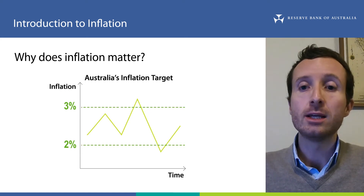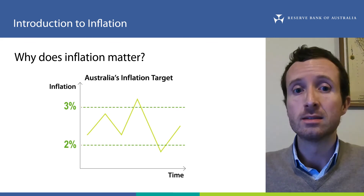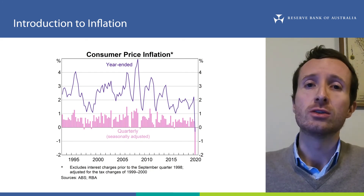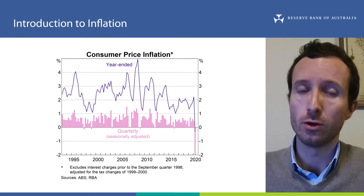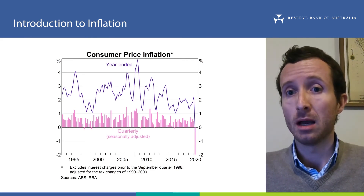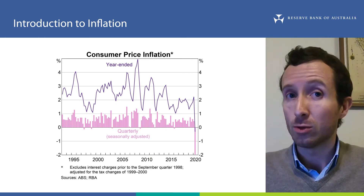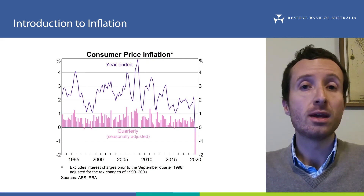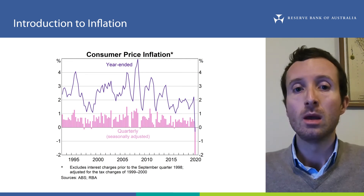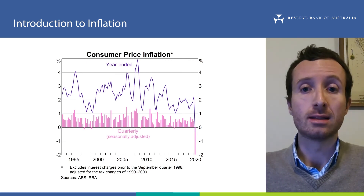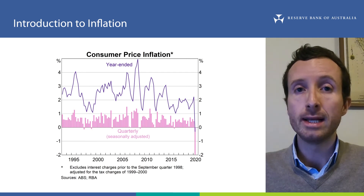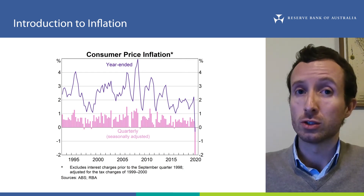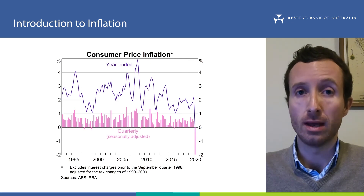Now that we're comfortable with some key concepts about inflation — what it is and why it matters — let's look at some data. This chart tracks CPI inflation in Australia over the past 25 years or so. The line tracks the change in the price of the CPI basket from the year before — what we've been calling annual inflation. The bars track the change from the previous quarter. They are tracking the same thing, just over two different periods of time. Over the period shown in the chart, annual inflation has been around 2.3% on average.